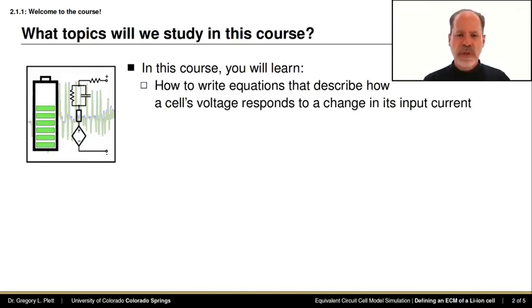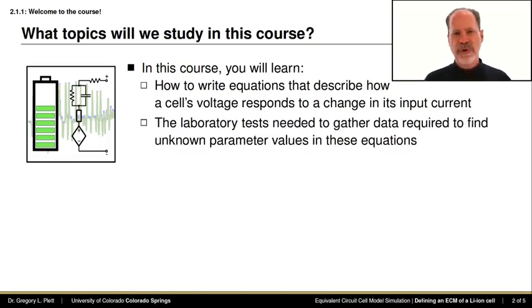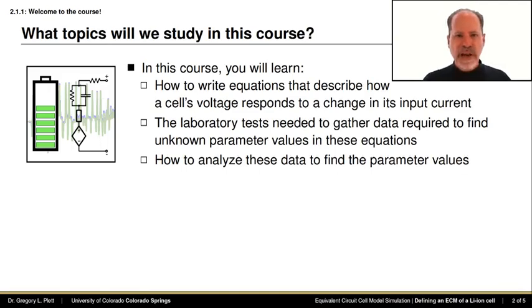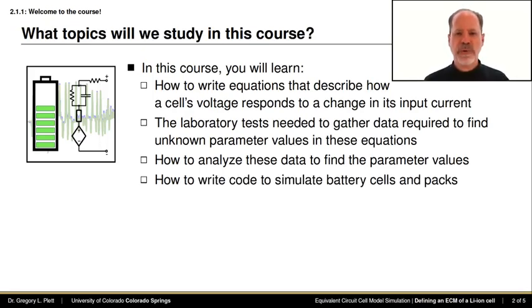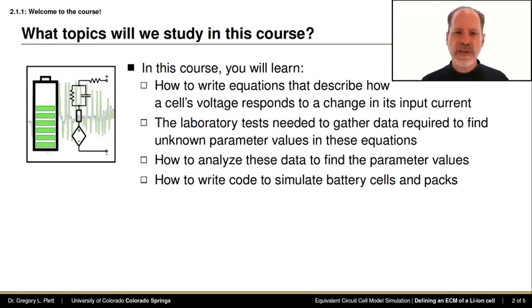In this course, you will learn how to write equations that describe how a battery cell's voltage will respond to a change in its input current stimulus. You will also learn what laboratory tests you must perform in order to gather the data required to compute the parameter values or constants that go in the generic battery model equations. You will learn how to analyze the data collected in the laboratory to compute the values of these parameters, and how to write computer code to simulate battery cells and battery packs in operation. We will develop these codes using the Octave programming language, which is very similar to MATLAB.